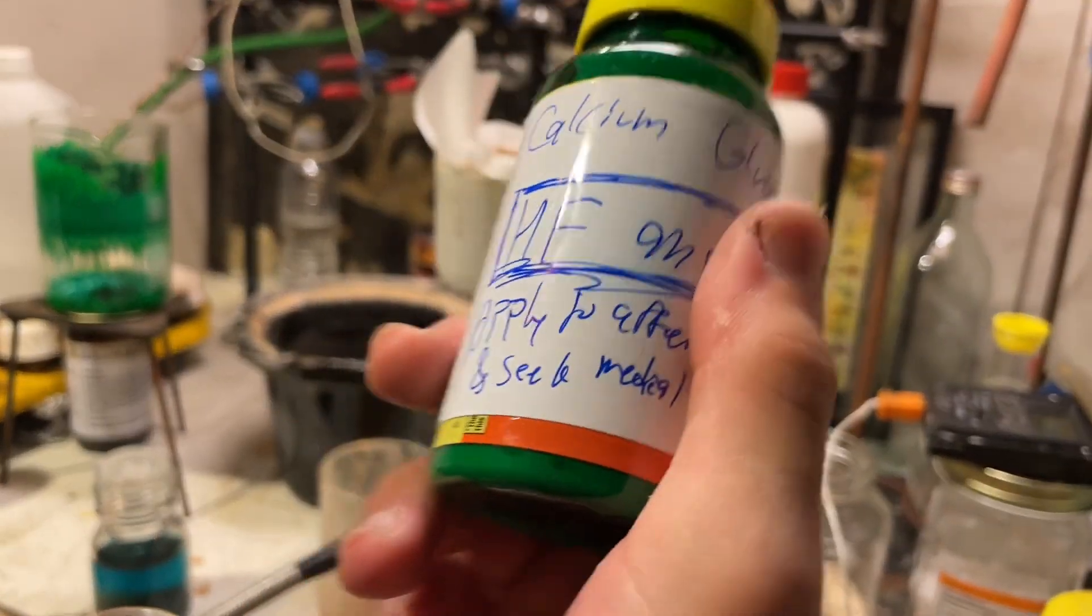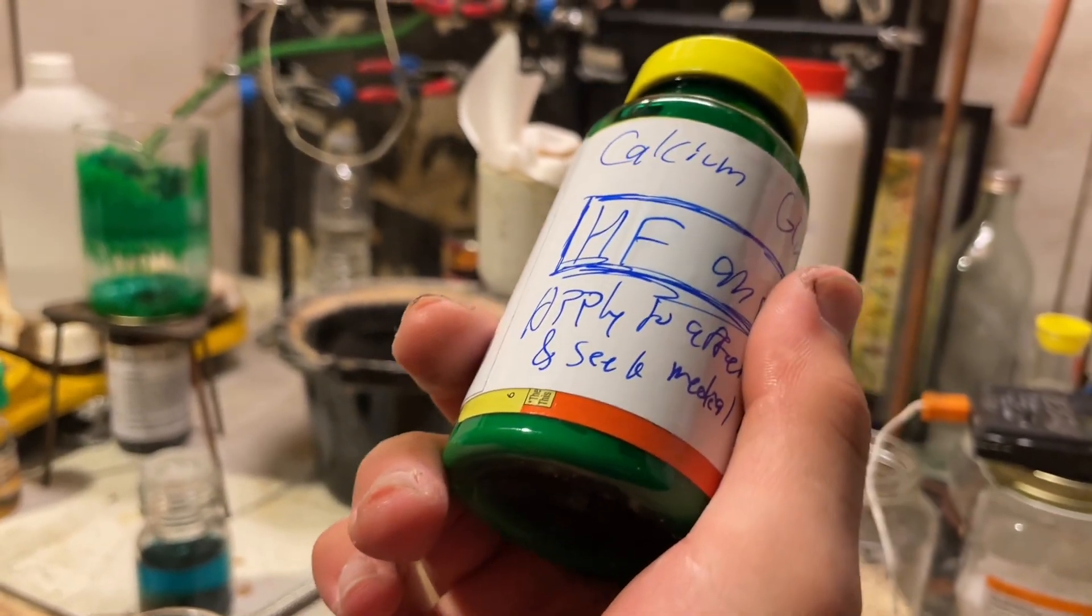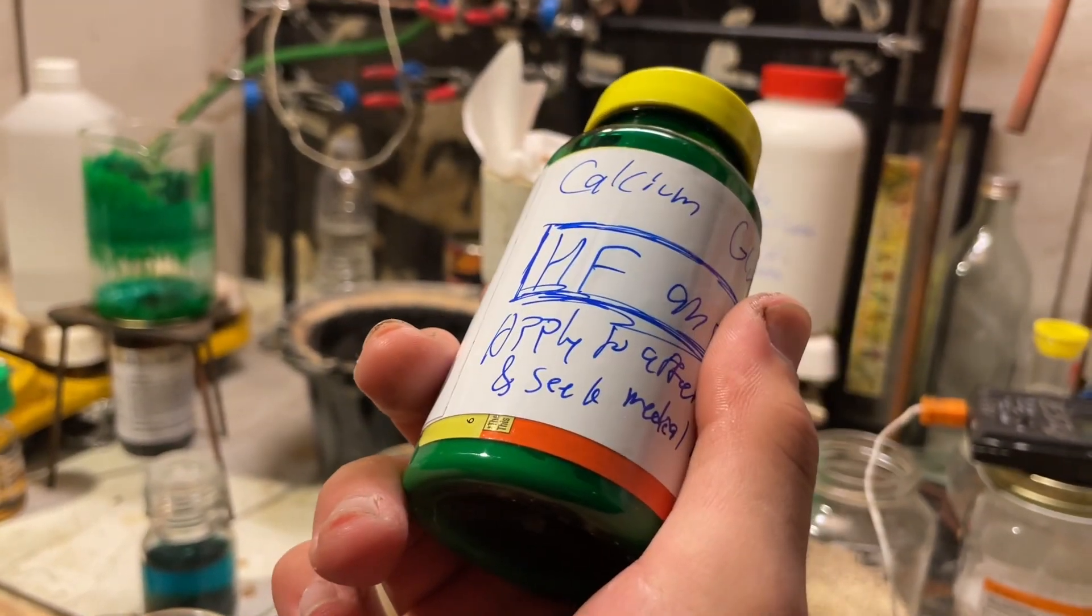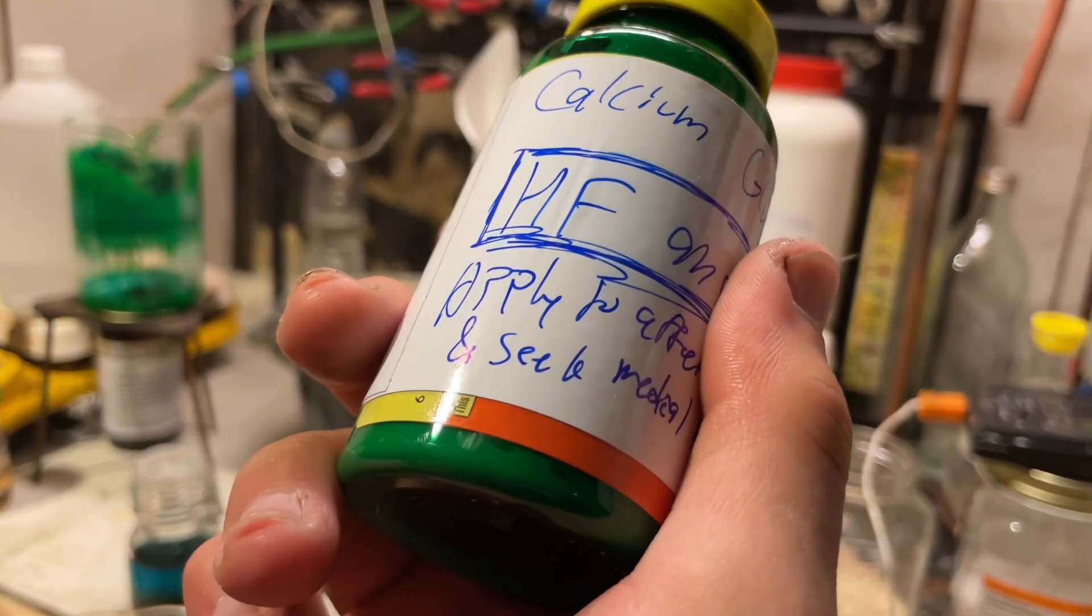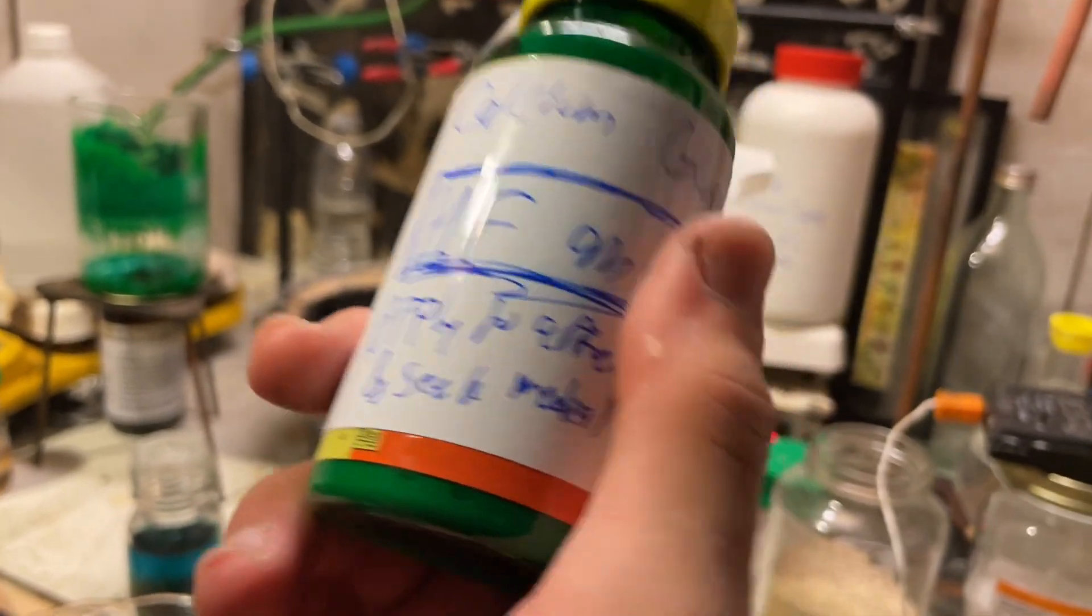They're all just carboxymethylcellulose, 2.5% calcium gluconate, water, and some kind of preservative like sodium benzoate or methylparaben. You want to know what this is? I don't even need to use carboxymethylcellulose because calcium gluconate has low solubility in water.